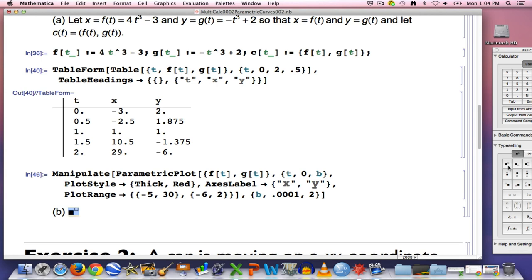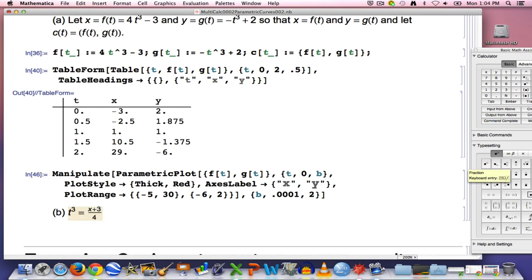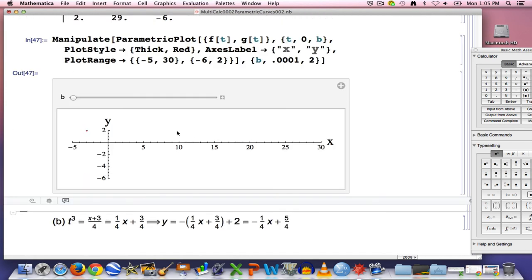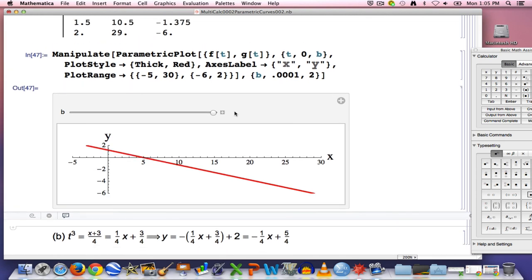So again, solve the first equation for t cubed as a function of x. You would have to add 3 to both sides of the equation and then divide both sides by 4. You can rewrite this as 1 fourth x plus 3 fourths. And then you want to take this expression and plug it in to this equation in place of the t cubed to get y ultimately as a function of x. And lo and behold, it is a linear function of x. That is the explanation for why the graph is in fact a straight line. In fact, it's a straight line with a slope of negative 1 fourth and a y intercept of 2 minus 3 fourths. That will be 5 fourths. And you should be able to see that if you look at this, the slope is negative 1 fourth and the y intercept is positive 5 fourths.